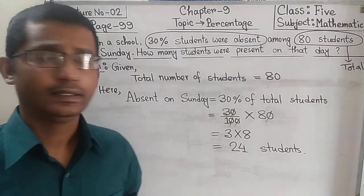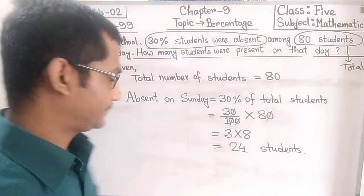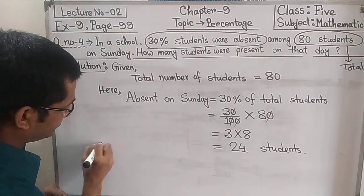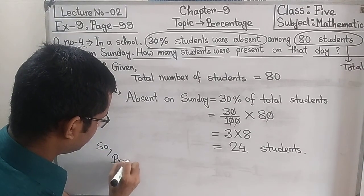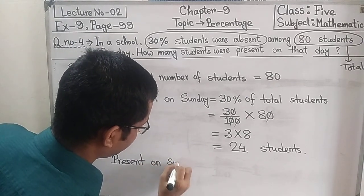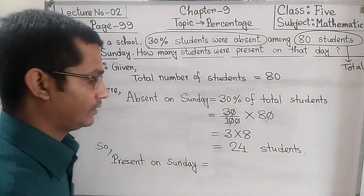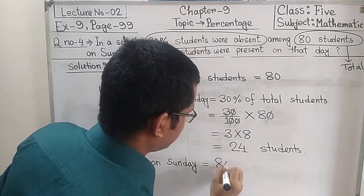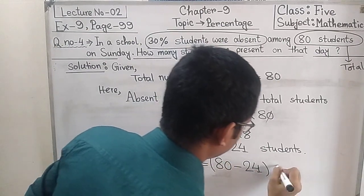Now we will easily get the number of students present on Sunday. Therefore, present on Sunday equals 80 minus 24 students.